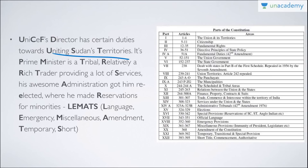He is financially well off, a trader, provides a lot of services, and his awesome administration got him re-elected when he made reservations for a minority — imagine in Africa there is a tribe called Lemet, representing minorities like Muslims, Buddhists, Sikhs — and he made reservation provisions for them. Note: Part 9B on Cooperative Societies is not included in this mnemonic; remember that separately.